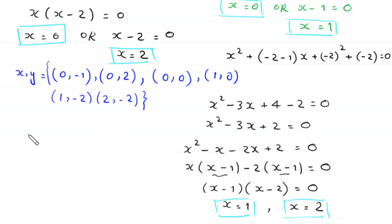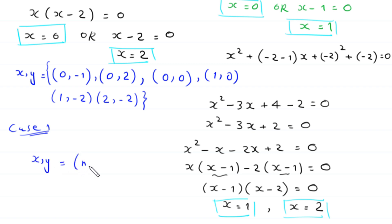From the second case we get these 6 pairs. And from Case 1 we get that x, y equals n, n for any integer n, where n is a member of the integers.